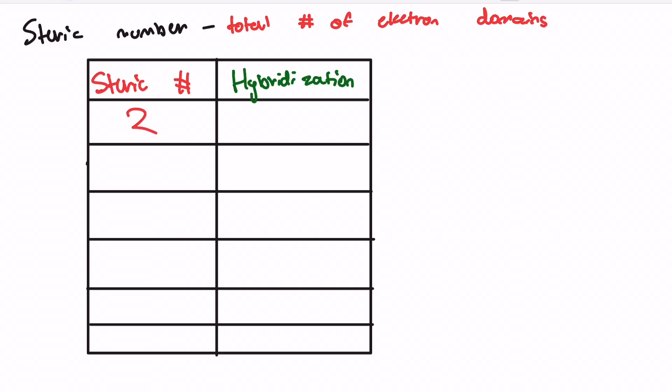We then just assign a hybridization depending on how large our steric number is. A steric number of 2 will have a hybridization of sp. A steric number of 3 will have a hybridization of sp2. 4, of course, will then have a hybridization of sp3.